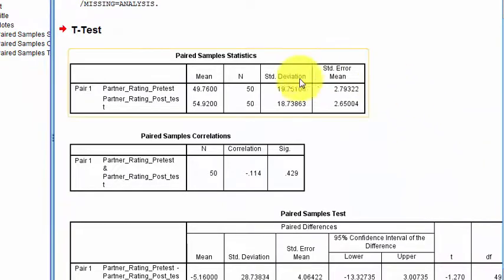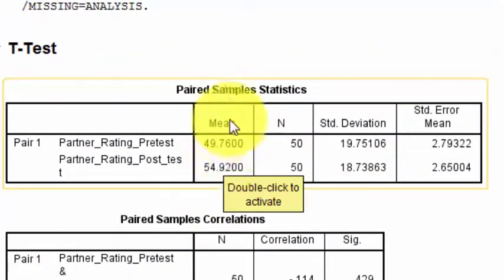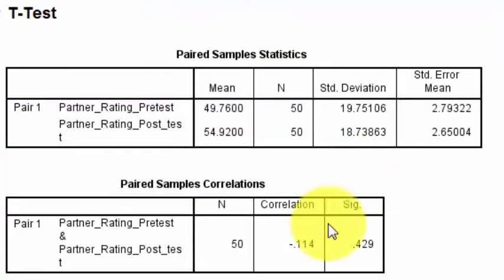Here is your output box. There's the means. They're relatively close, but that doesn't mean anything because the standard deviations are huge. That's what it tells you right here. We don't care about correlations.